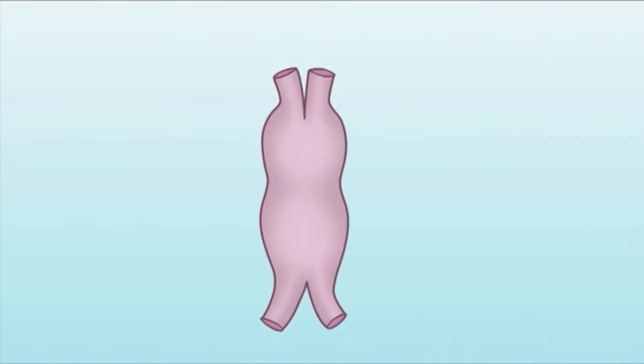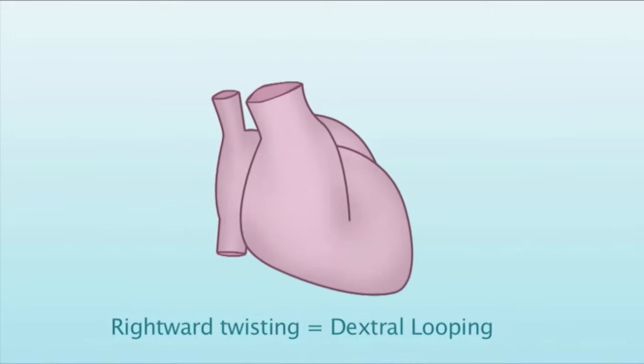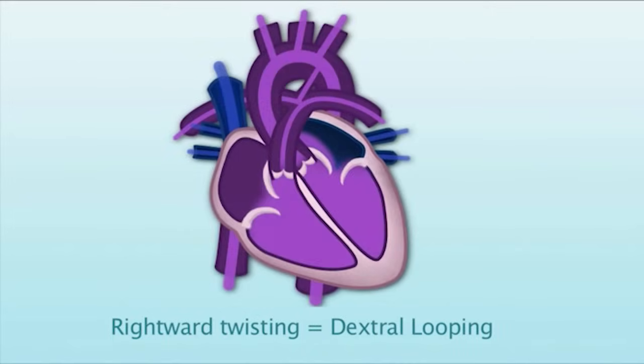In normal cardiac development, the cardiac tube will twist and turn on itself in a rightward direction. This is called dextral looping. This results in the right ventricle developing on the right side of the heart and the left ventricle developing on the left side of the heart.